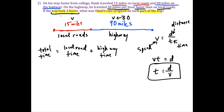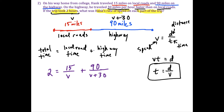The total time Hank is driving is two hours. The time on local roads is the distance divided by the speed: 15 over V. Plus the time on the highway: 90 divided by V plus 30. So our equation is: 2 equals 15 over V plus 90 over (V plus 30). To solve this rational equation, we multiply everything by the least common denominator, which is V times (V plus 30).